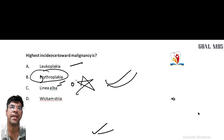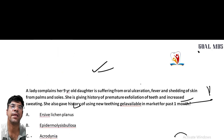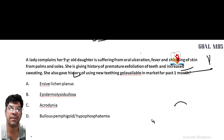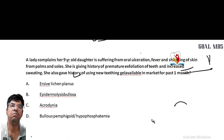Highest incidence toward malignancy: it is erythroplakia. Remember for your exam that erythroplakia has the highest incidence toward malignancy — this is frequently asked in entrance exams.